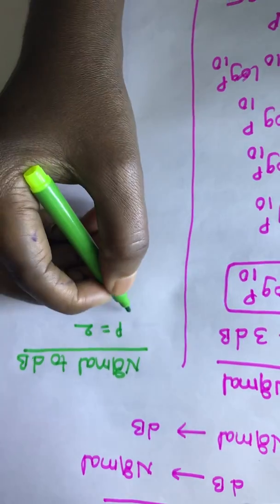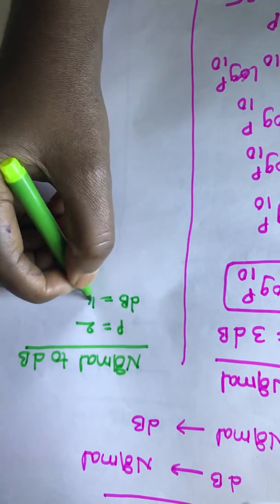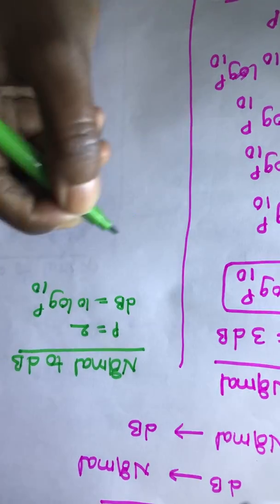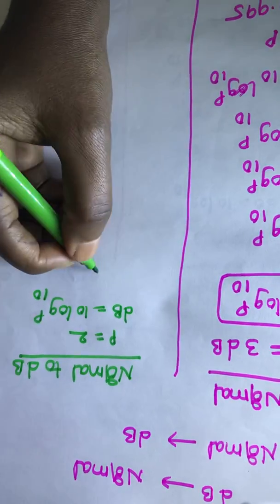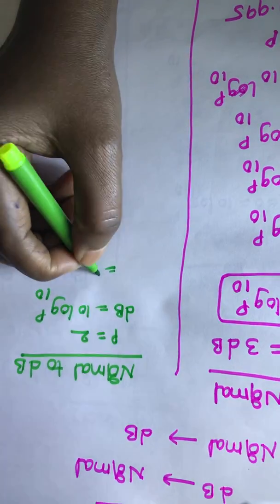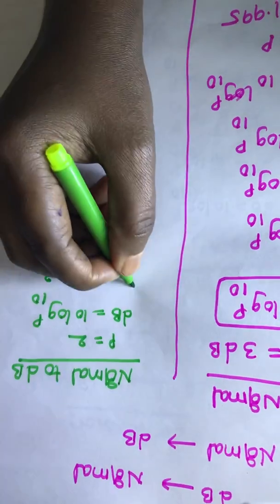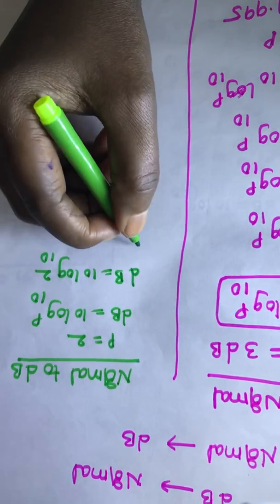We will use same formula, dB is equal to 10 log P base 10. Now we will submit this power value into this, 10 log 2 base 10. We know that log 2 is equal to 0.30.